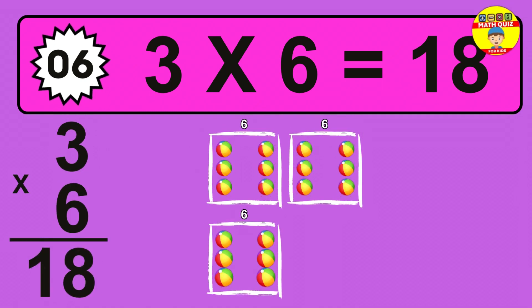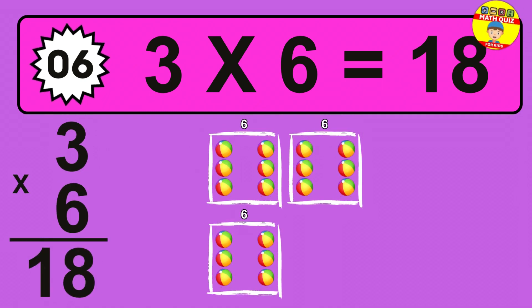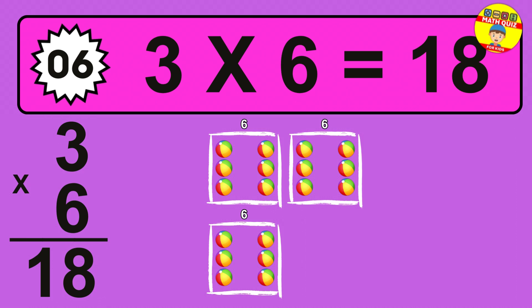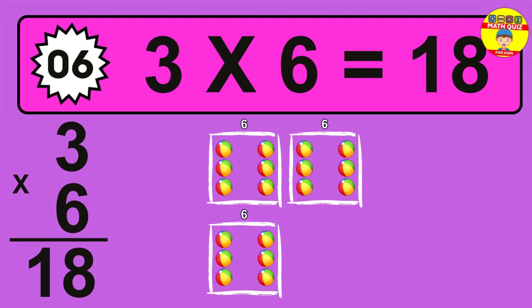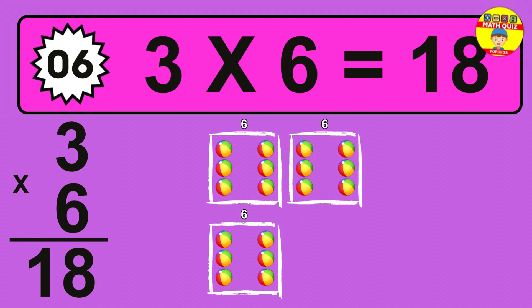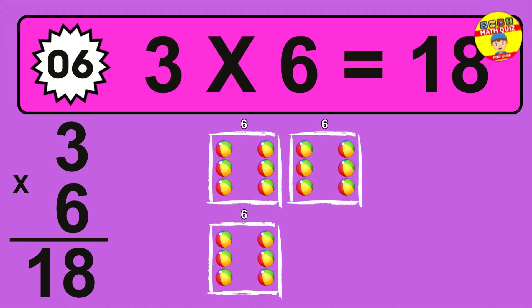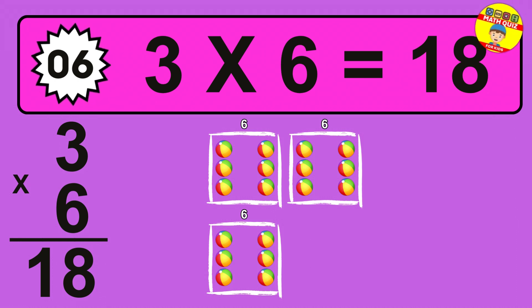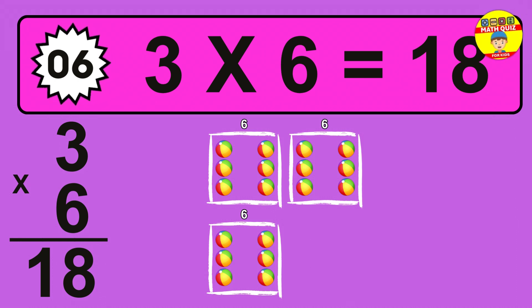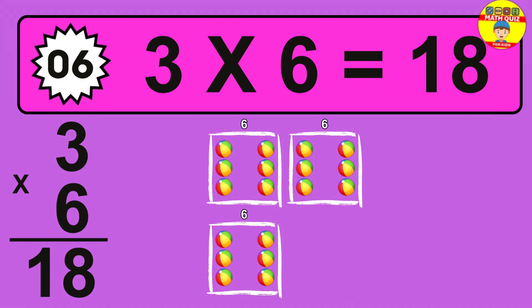The answer is 3 times 6 is 18. To calculate, we have 3 groups with 6 balls each one. So, how many balls do we have? 18 balls.